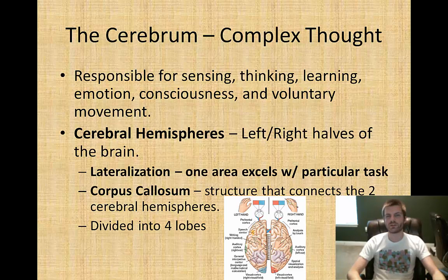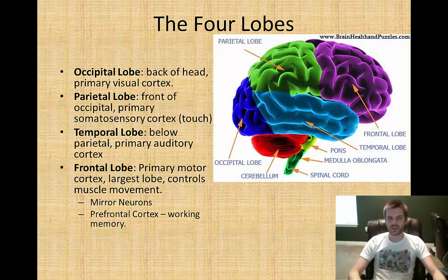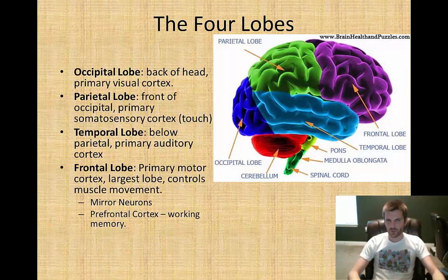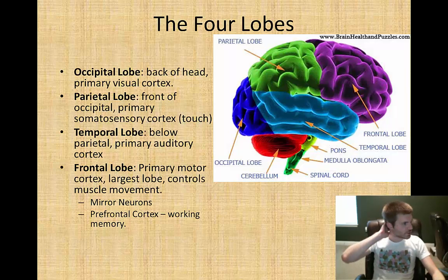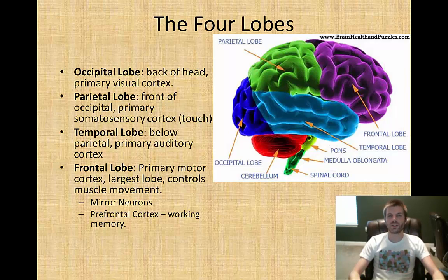Your brain hemispheres are divided up into four lobes: the occipital lobe, the parietal lobe, the temporal lobe, and the frontal lobe. Each area has a specific function. The occipital lobe is in the back of your head and is the primary visual cortex. One way to remember it: if you were hit in the back of the head with a baseball bat, you might see stars. You can also put a tiny dot in the O of occipital to make it look like an eyeball.